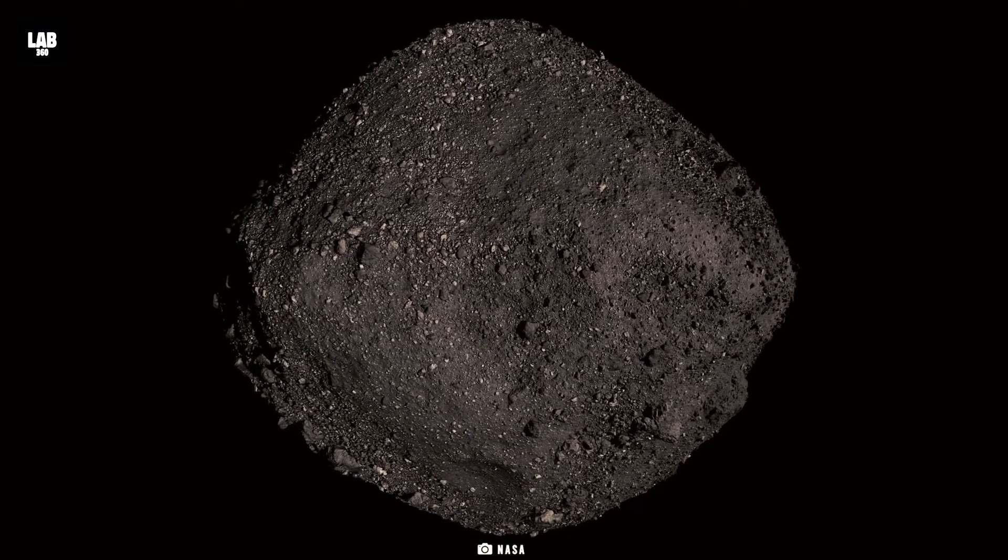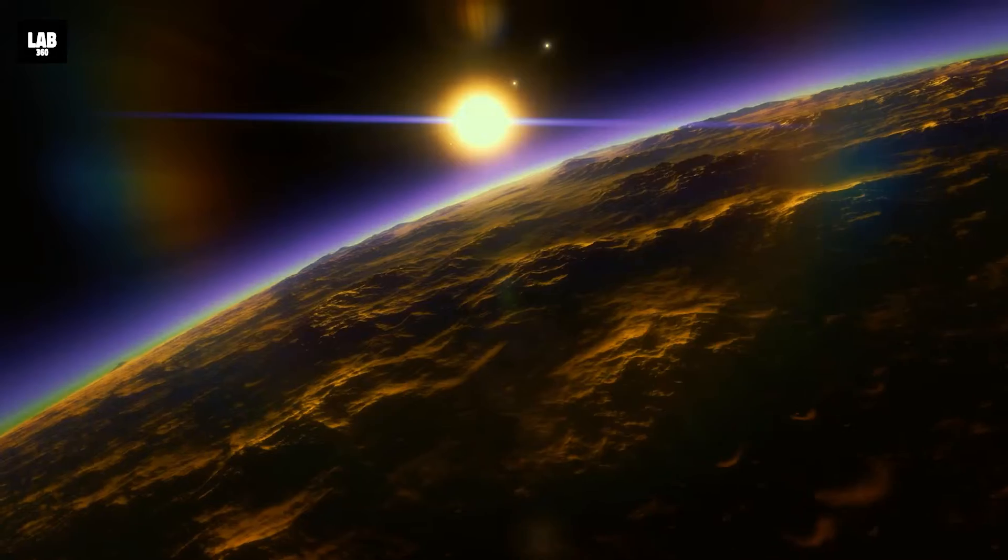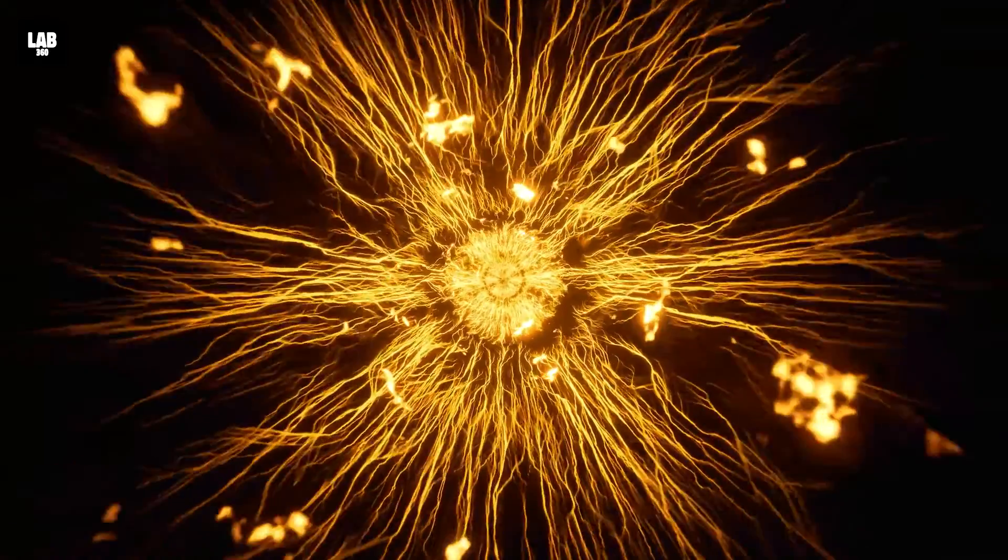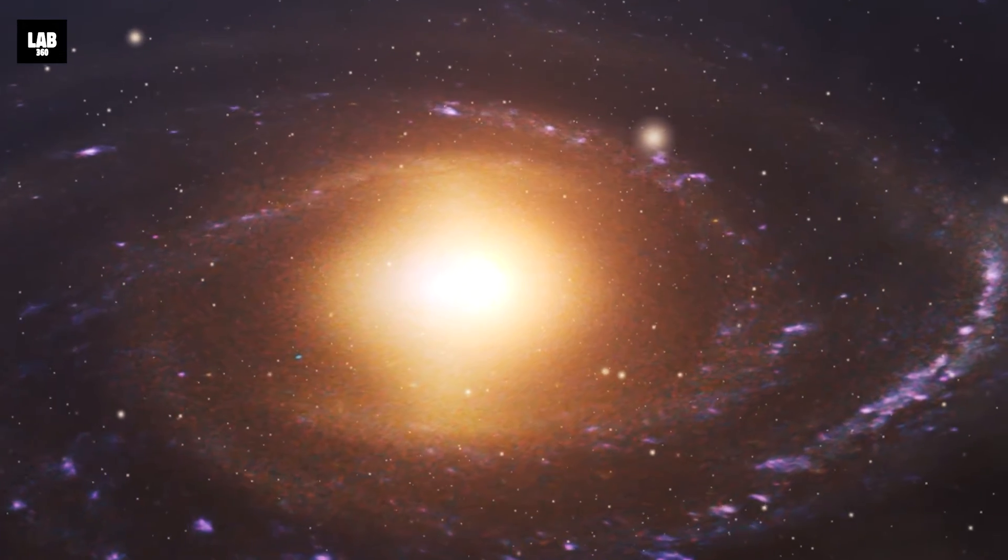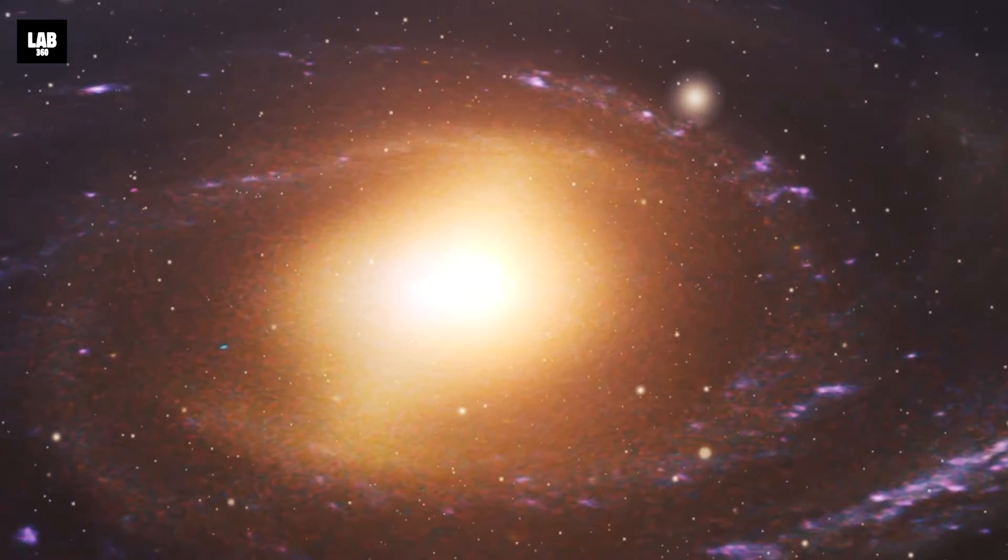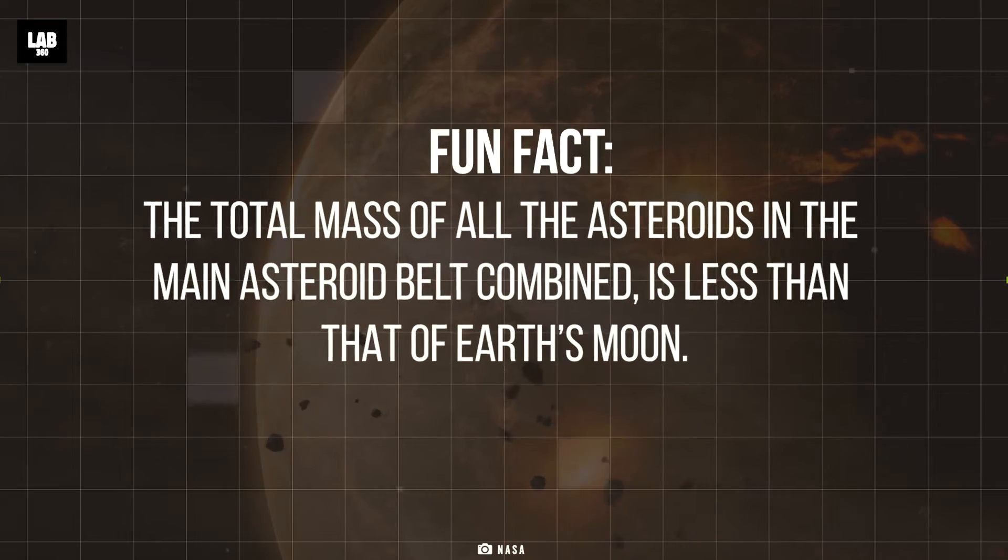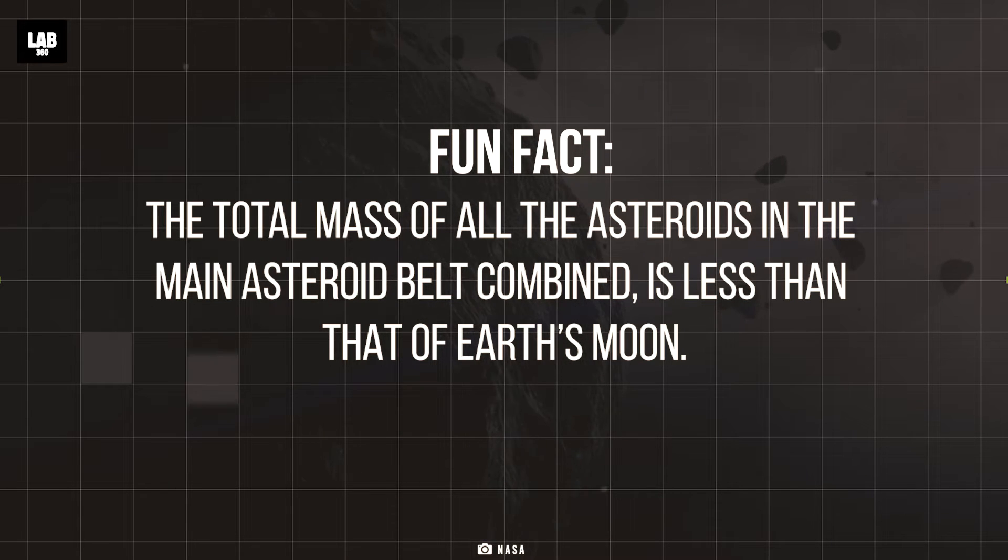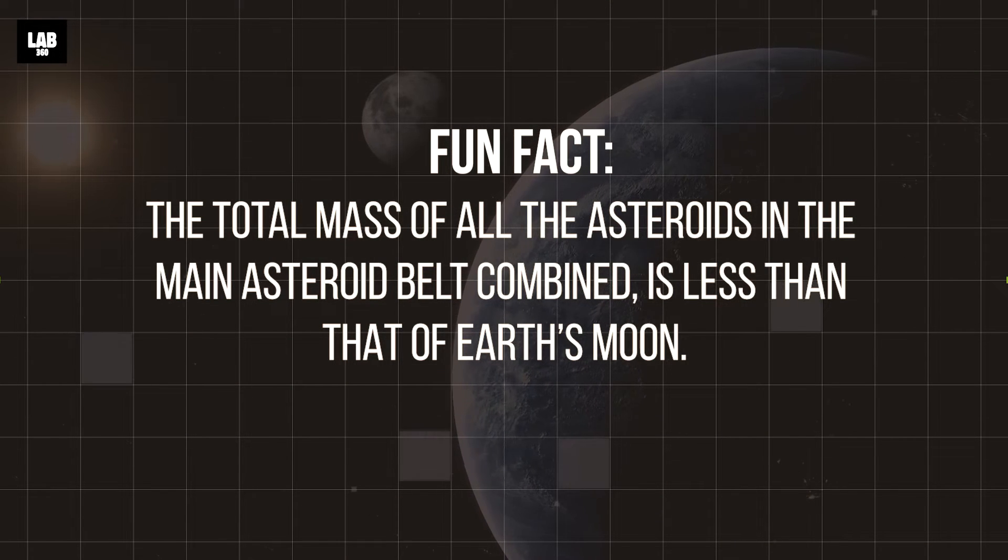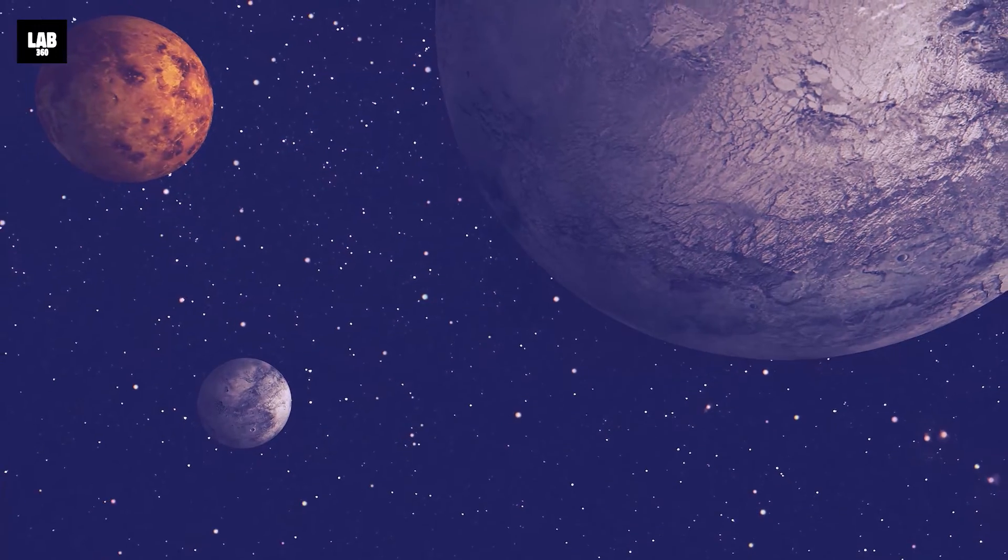Bennu is about one-third of a mile wide at its equator and is touted to be an ancient relic of our solar system's early days, containing more than 4.5 billion years of history. Fun fact: the total mass of all the asteroids in the main asteroid belt combined is less than that of Earth's moon.